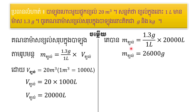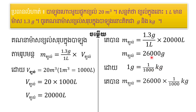We have 7 grams, and we can add 1 kilogram. So 1 gram is 1 gram. 30 grams is 1 gram. We can add 1 gram.